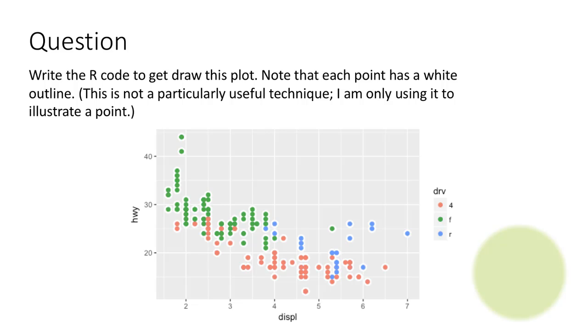I assume you paused the video and suggested some sort of an answer to this and you're ready to look at the so-called official answer. The point here is that the way in which I've achieved this result of a white background for each point is essentially I plotted the geom_point layer twice.